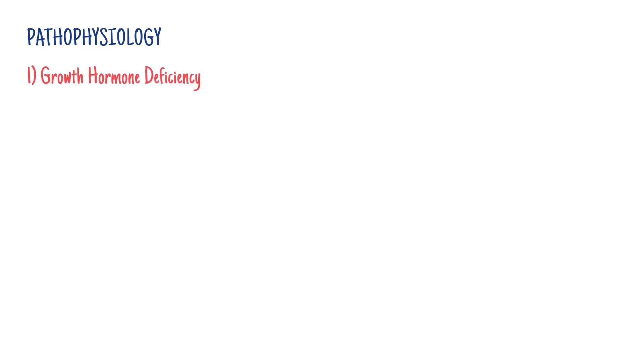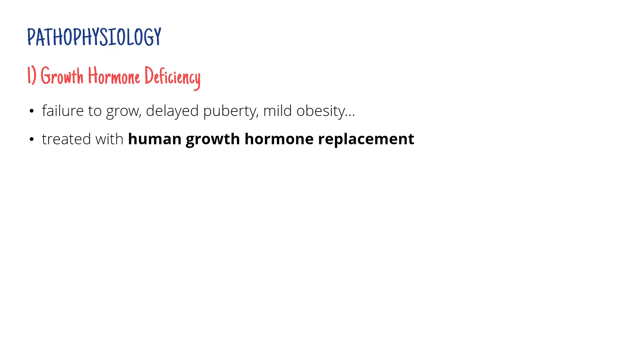Finally, I would like to look at pathophysiology so that you can see how we can use physiology in clinical medicine. We're going to look at what happens if there's too little or too much of the hormone. If there's too little, then obviously it causes failure to grow, delayed puberty, and also mild obesity. Remember that growth hormone also helps to utilize fat as a source of energy. This condition is called dwarfism and can be treated with human growth hormone replacement.